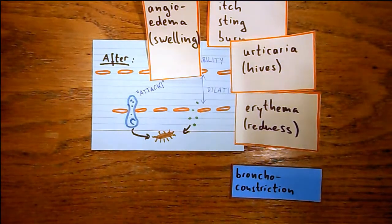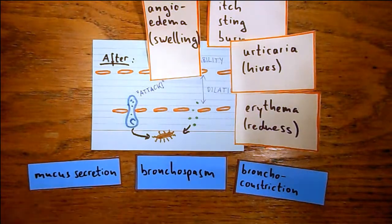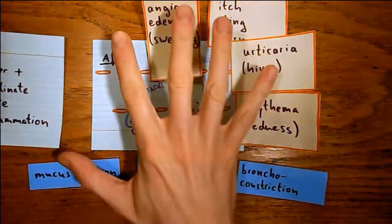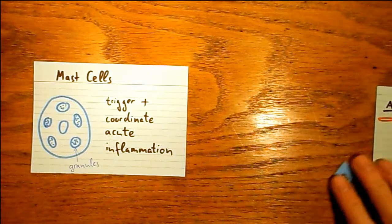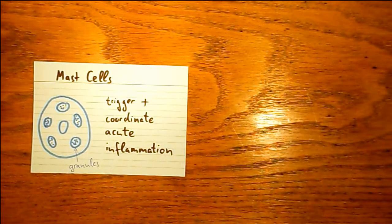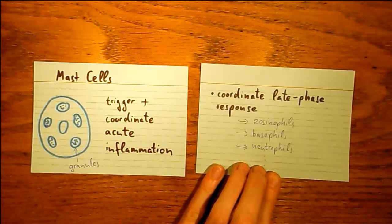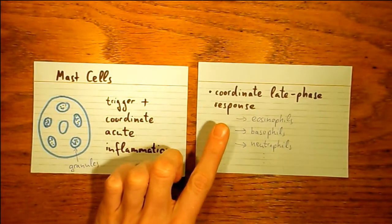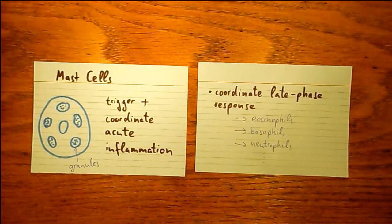We've seen these symptoms before somewhere. Mast cells actually have even more in store — for example, they use tryptase to call for more specialized white blood cells. Those take some time to get there, so there's not only an immediate inflammation going on, but several hours later there's a second inflammatory response with a white cell invasion. So the mast cells really trigger a comprehensive immune response against invading microorganisms.